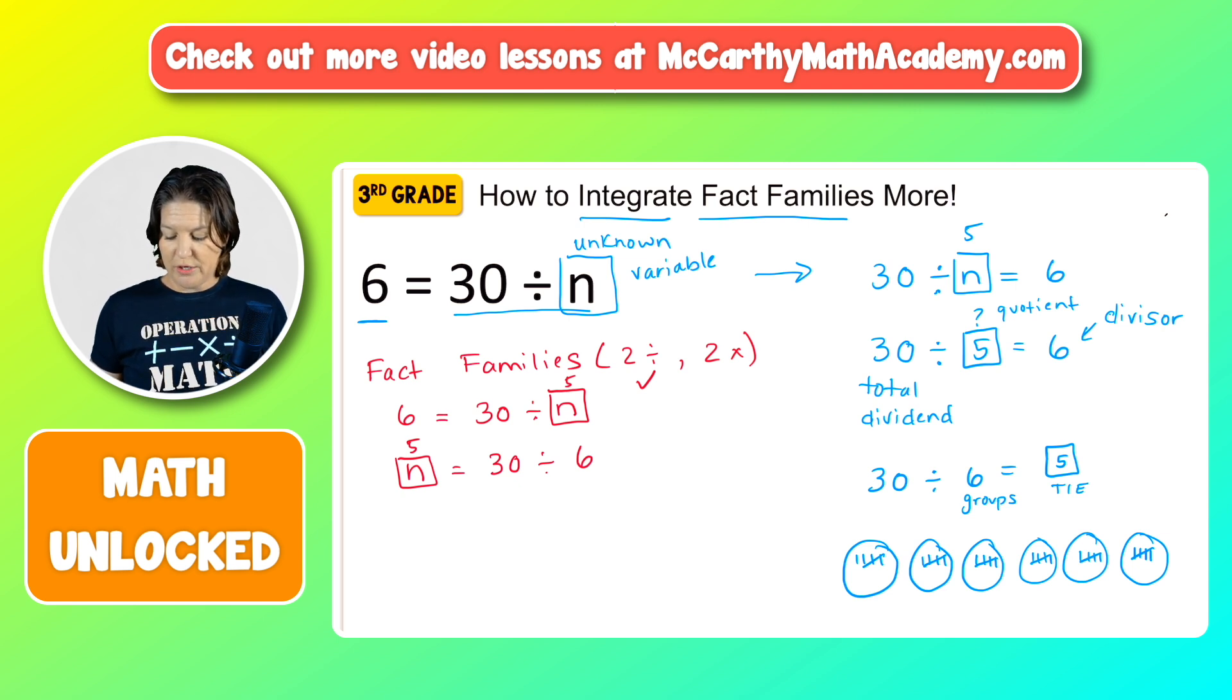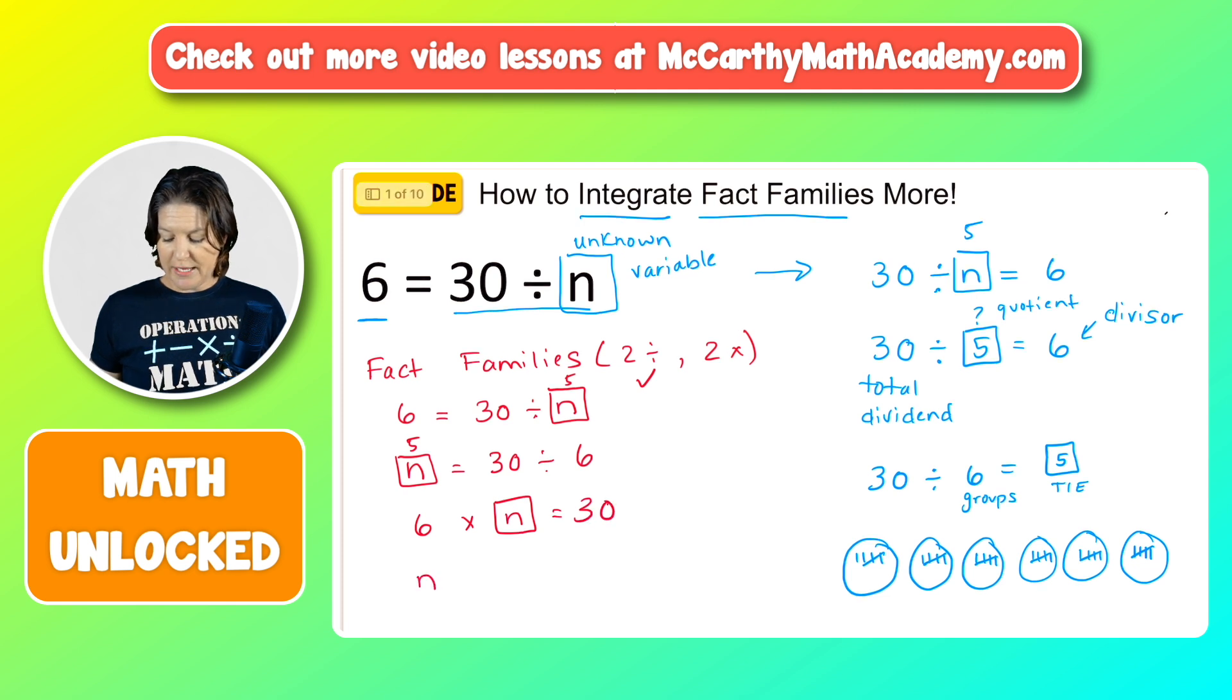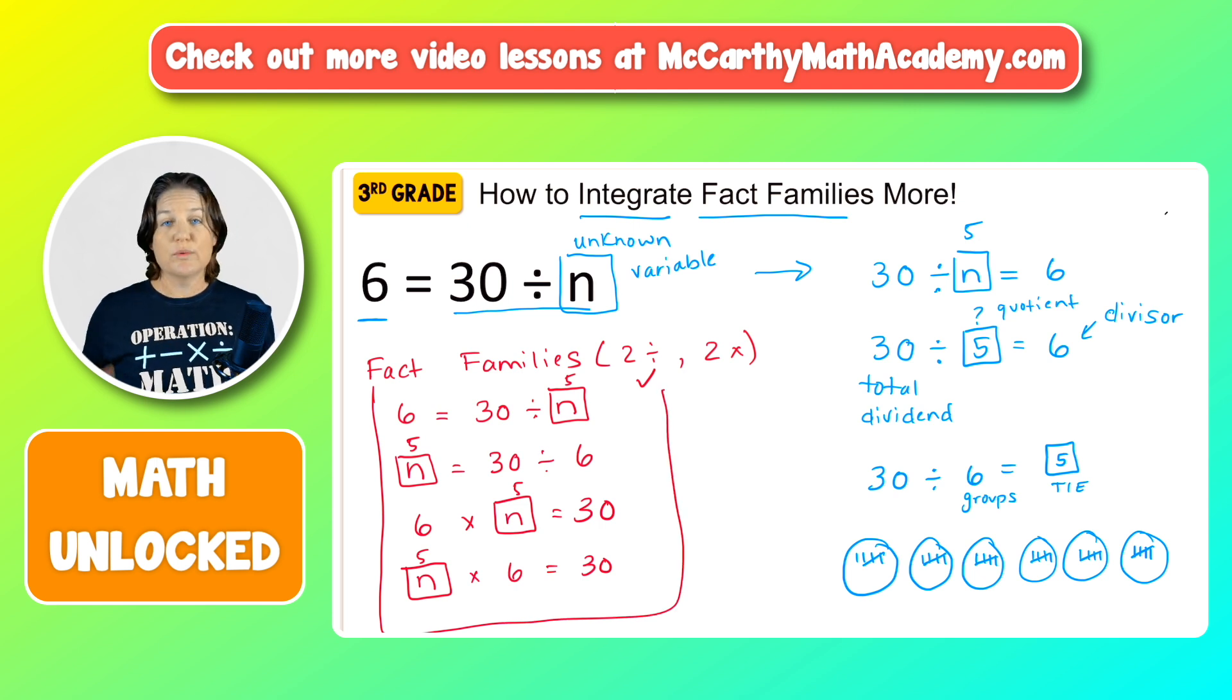And now let's create similar multiplication equations. We know 6 groups of N equals 30. And we know that N, if we flip-flop those factors and use the commutative property, N times 6 equals 30. And again, the value of N was 5 for each one. So it's really important to be integrating fact families whenever we can, because we want our students to understand the connection between multiplication and division.